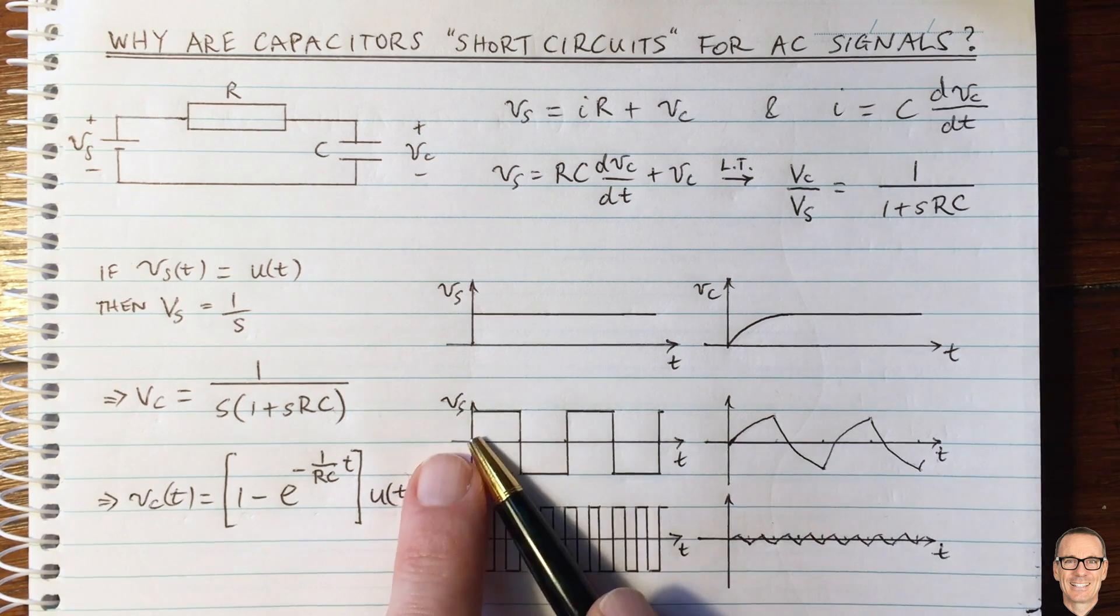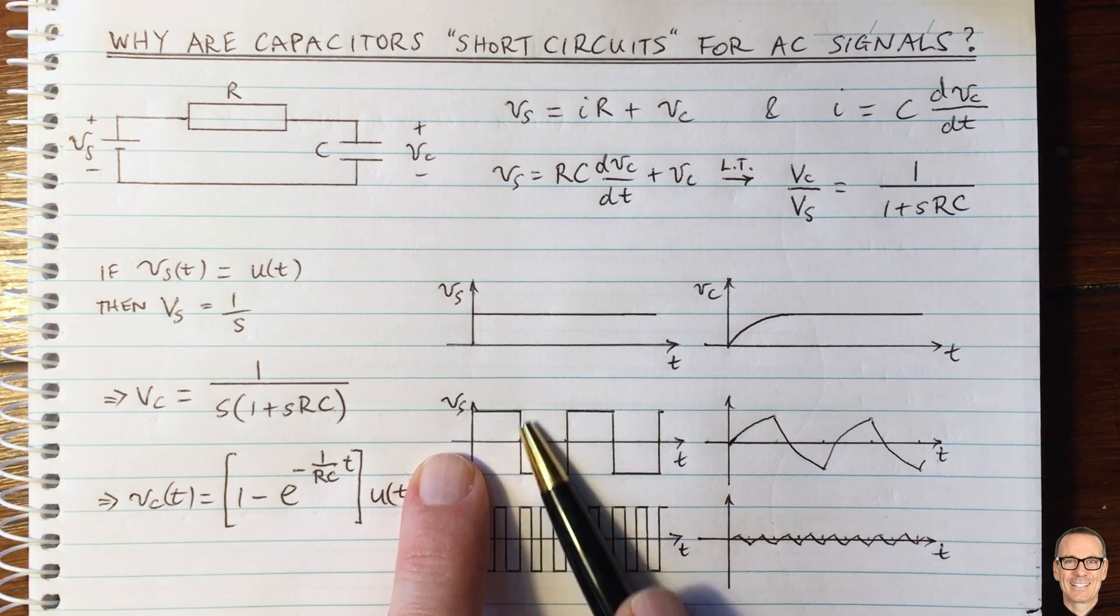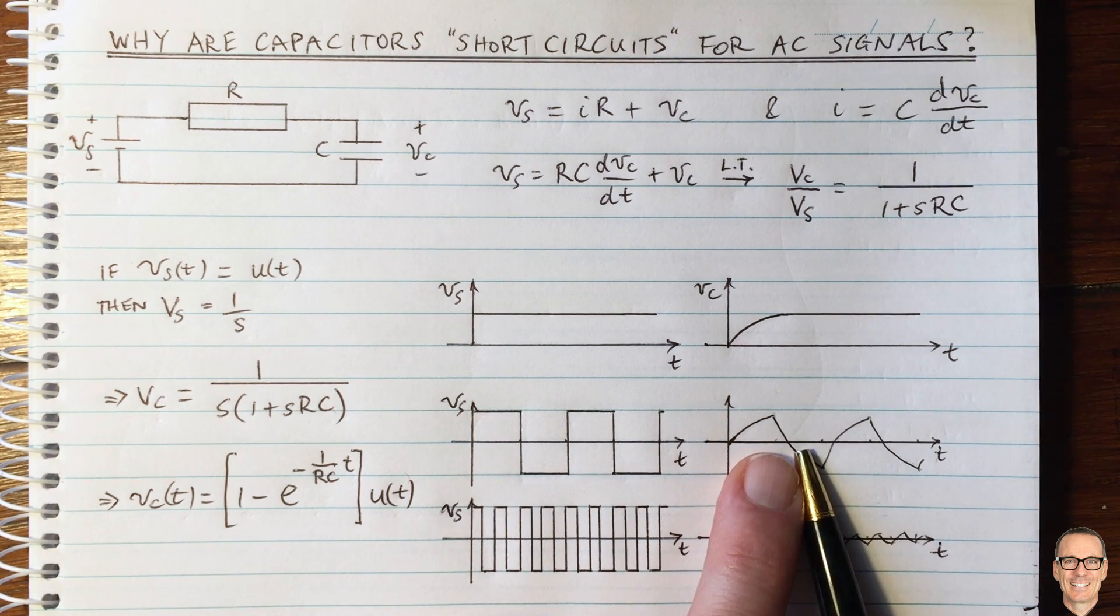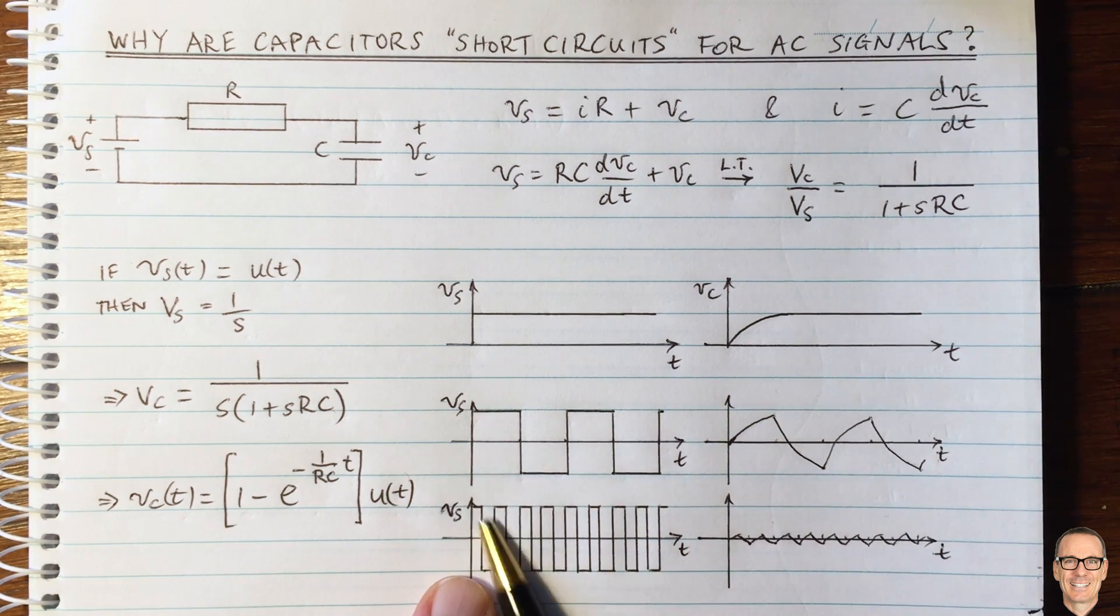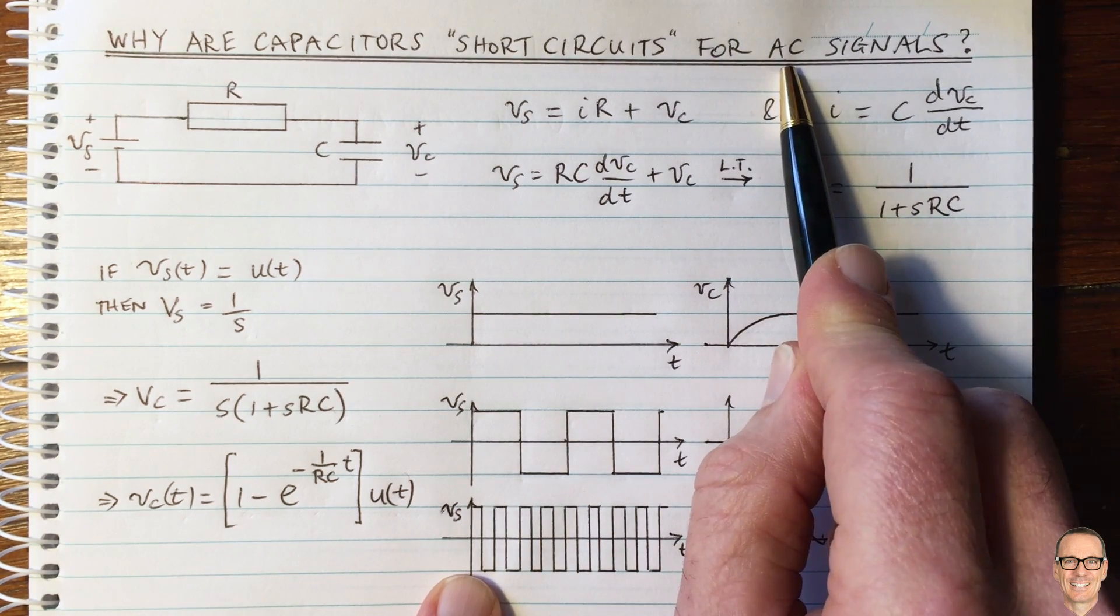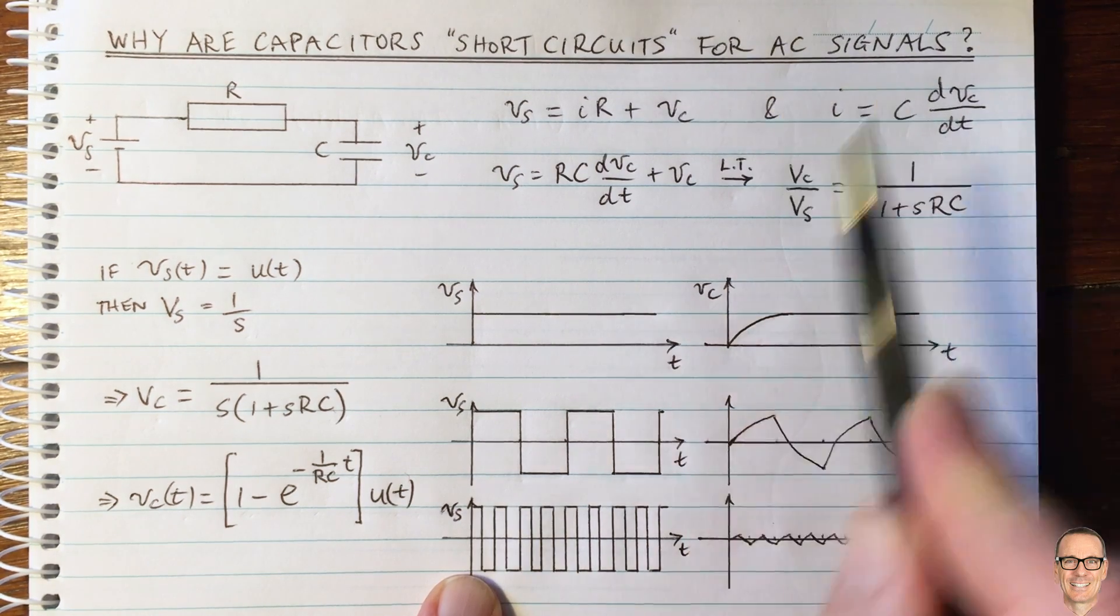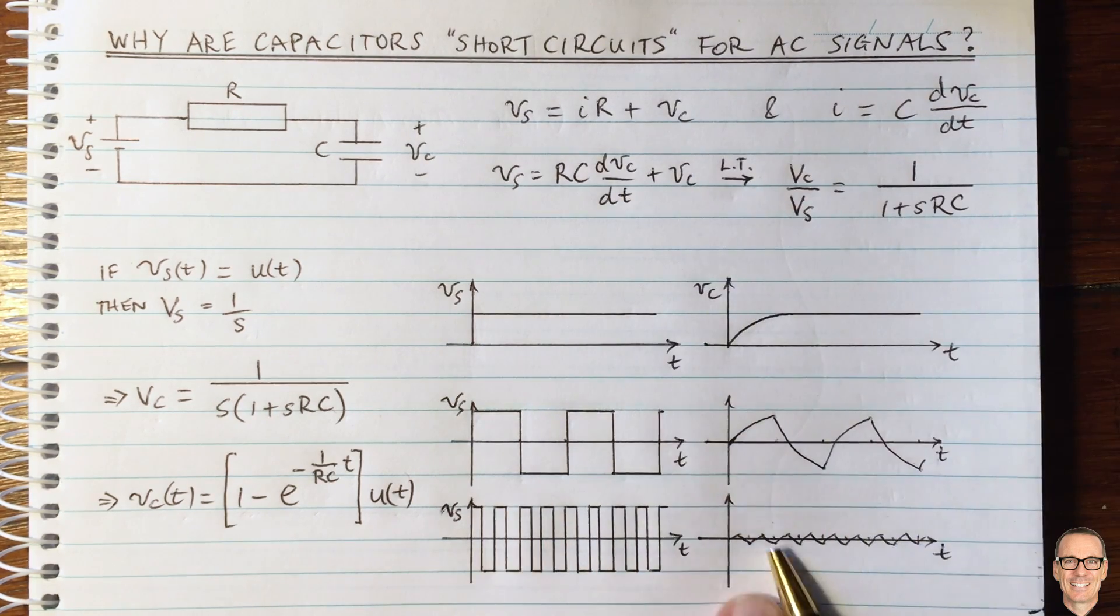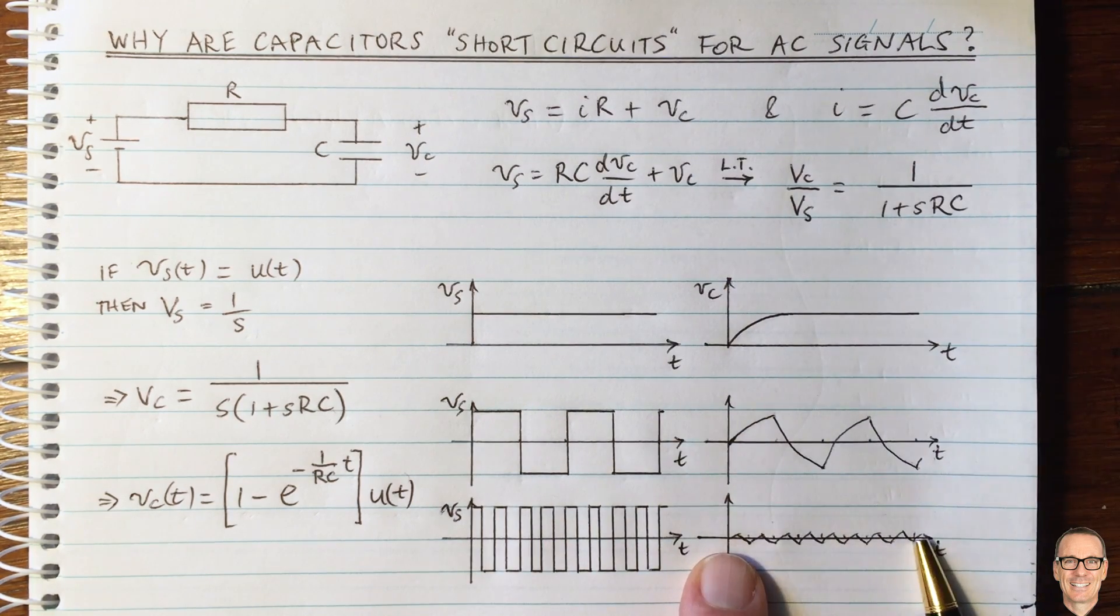But I think you can imagine that if it wasn't quite a sharp jump, but it was a bit of a more smooth jump, you'd still be getting the same effect at the output. So when it starts oscillating fast, which it does for AC signals, because they are at much higher frequencies than these very low DC signals with DC changes, then the output is going to be zero.